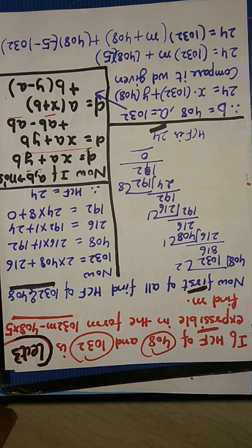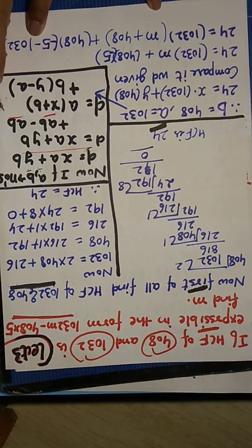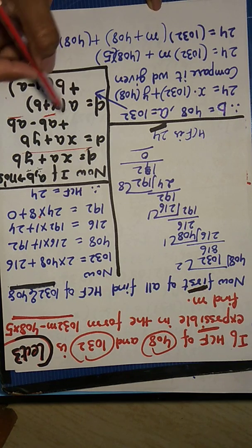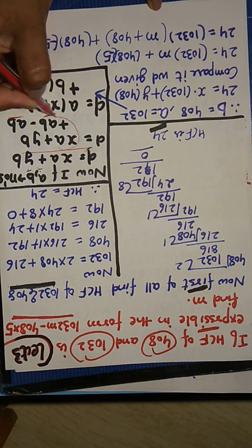So D equals to XA plus YB. What do you need to do? You need to combine the numbers A and B. Like these numbers, you need to combine the numbers A and B.